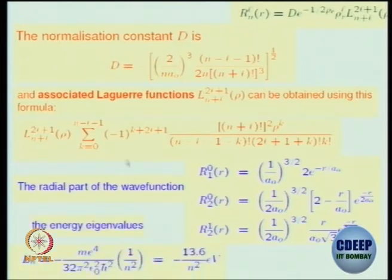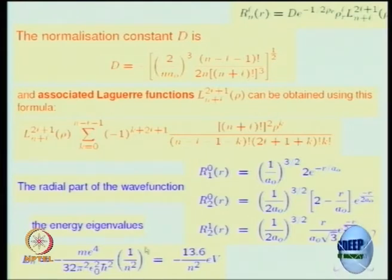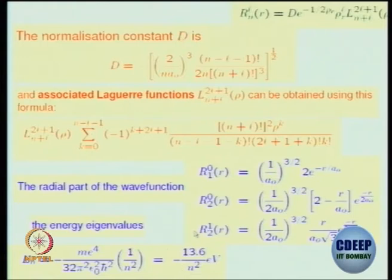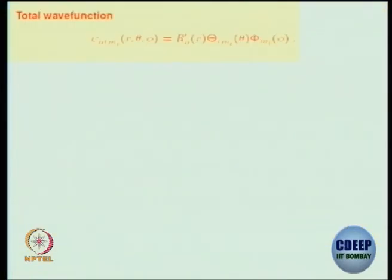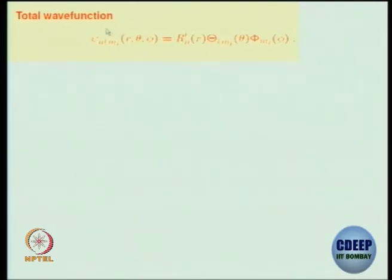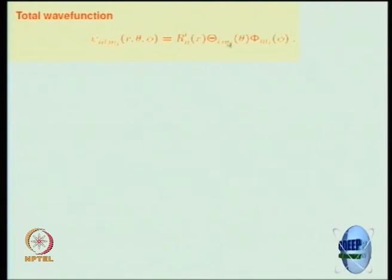The energy eigenvalues also follow from this solution. You can read off what the energy is — it is proportional to 1 over n² in electron volts. You can write it as −13.6 electron volts, with a negative sign because it is a bound state. Formally, the hydrogen atom wave function can be written with 3 quantum numbers: M_L from the phi variable differential equation, and L and M_L together show up in the theta part of the wave function.